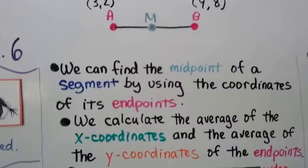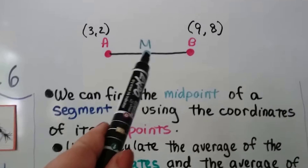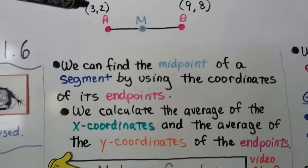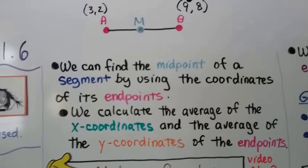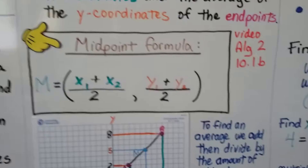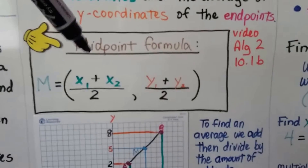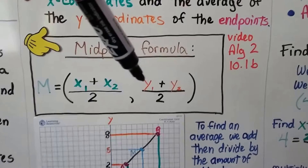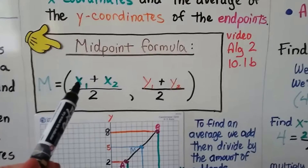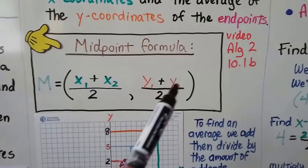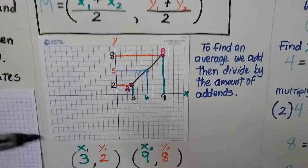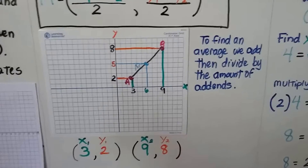We can find the midpoint of a segment by using the coordinates of its endpoints. We calculate the average of the x-coordinates and the average of the y-coordinates of the endpoints. Here's our midpoint formula: M (midpoint) equals the quantity (x₁ + x₂)/2 and (y₁ + y₂)/2. The subscripts tell us which x and which y we're talking about — the first x and second x, the first y and second y.